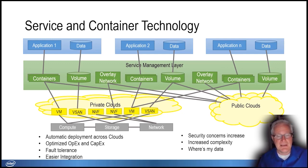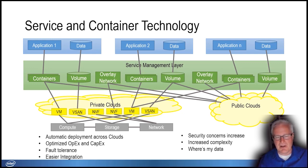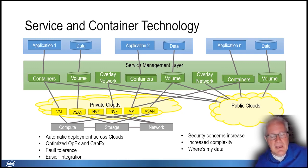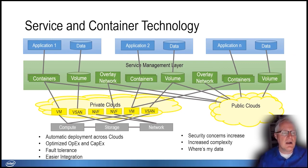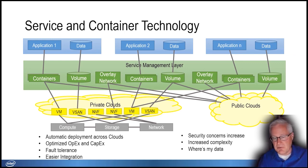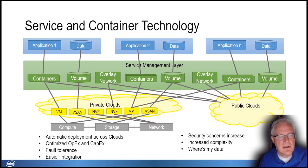Security is still the number one concern with containers, since they're easy to deploy across multiple environments and security can be forgotten. There's also increased complexity, having moved from three-tier architectures to multi-tier or microservice architectures with dozens of services working together. And there's still the question of where's the data? You can deploy a container anywhere, but it needs to be where the data is. In the service management layer, they really punted on storage — calling it just a volume, a generic concept that doesn't actually manage the data itself.